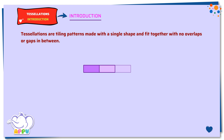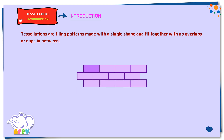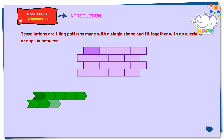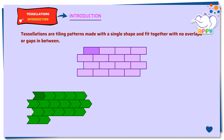This is a tessellation formed by rectangles. A shape can tessellate in different ways. This is a tessellation formed by an arrowhead shape. It can tessellate in a different way as well, as shown.